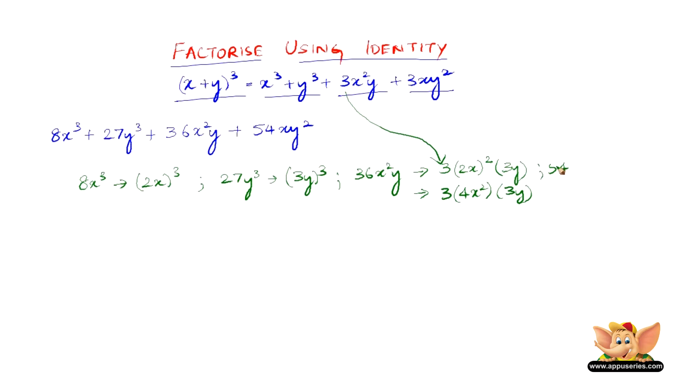Now we can write 54xy² as 3 × (3y)² × 2x. That's because we have 3 here from the formula, and then we have y as 3y and x as 2x, and this needs y², therefore I write it as 3y².